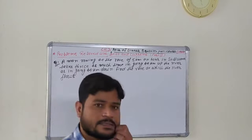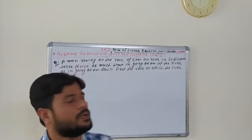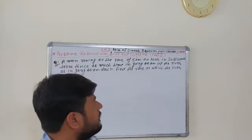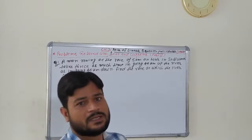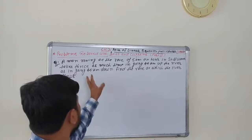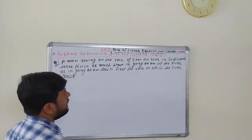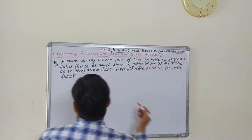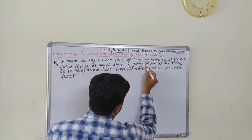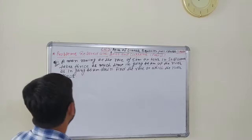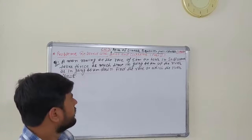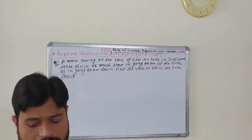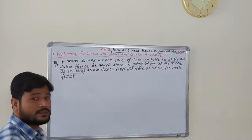Hello everyone. Today we will discuss a problem related to boats and currents — this is part 2, continuing from 2-3 questions from the last video. A man rowing at a rate of 5 km per hour in still water takes thrice as much time going 40 km up the river as going 40 km down. Find the rate at which the river flows.